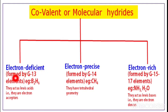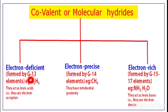Electron deficient hydrides are formed by group 13 elements — the boron family: boron, aluminium, gallium, indium, thallium. An example is B2H6. These compounds act as Lewis acids. Lewis acid means they accept electron pairs — they are acceptors.